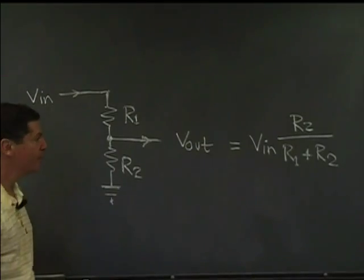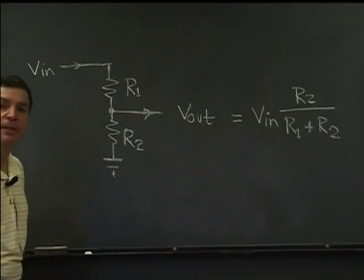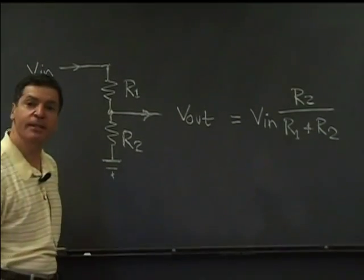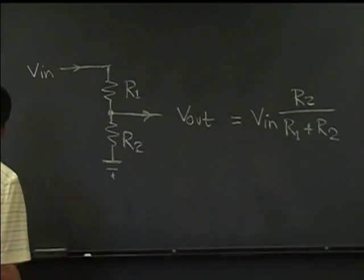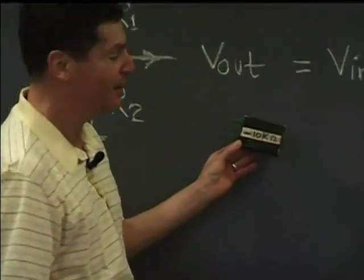Of course, this wouldn't be true if either R1 or R2 could be negative. Is it possible to have a negative resistance? Look what I have here, a black box that says minus 10k ohms on it. Let's see what this box might contain.